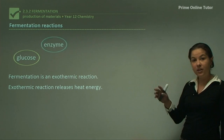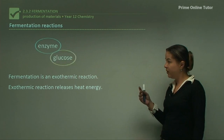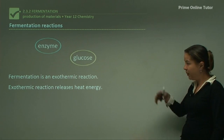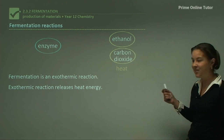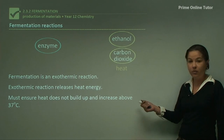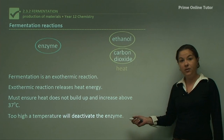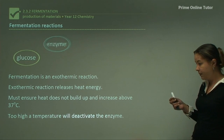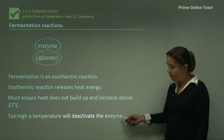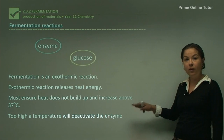When doing fermentation reactions on a large scale, you have to be very careful. Some people have tried to ferment beer in their garages and it's exploded because they're not releasing the gas. You must ensure that the heat does not build up and increase above 37 degrees, as too high a temperature will deactivate the enzyme. Above this, the yeast will die and the reaction will stop. Below this, the reaction will either go very slowly or not at all. So 37°C is the optimum temperature for fermentation.